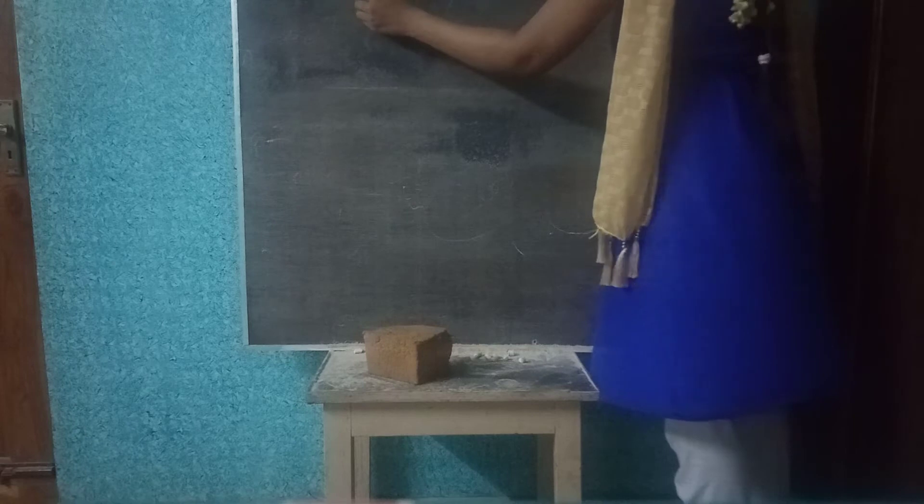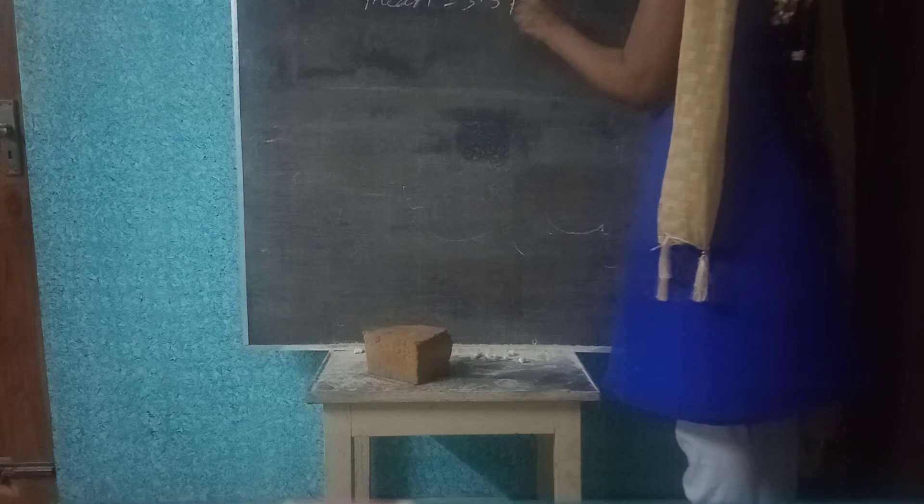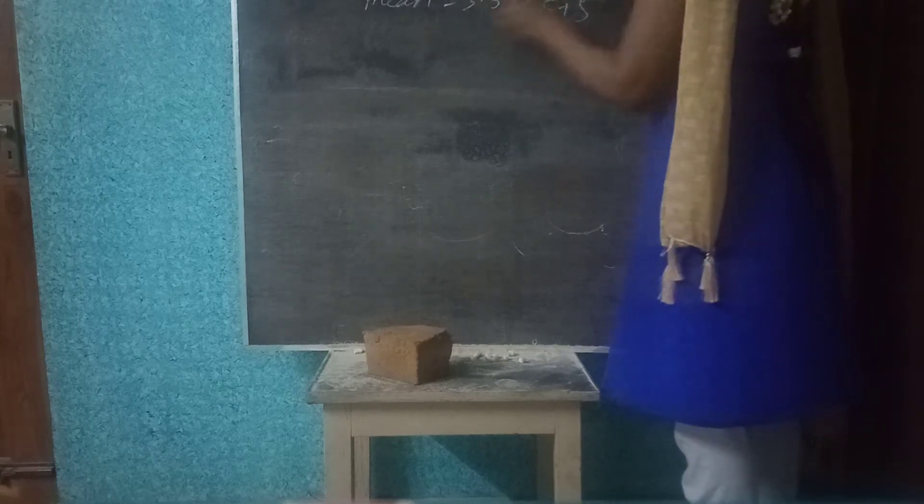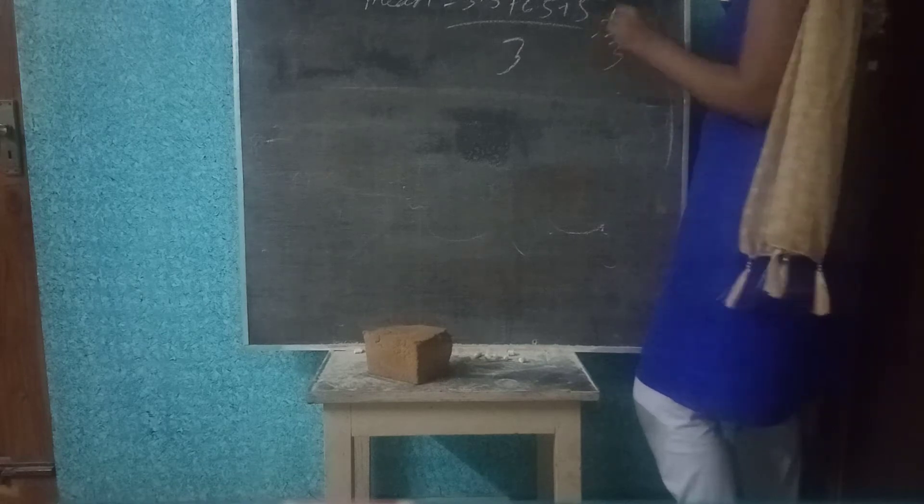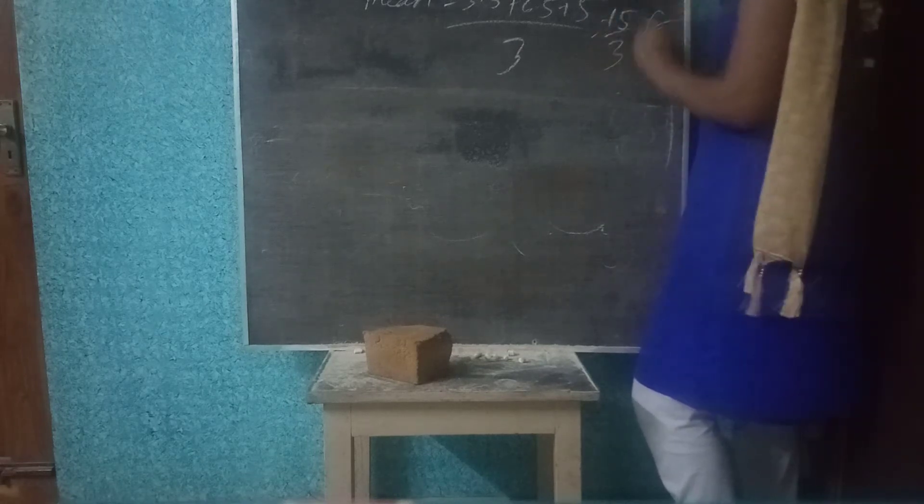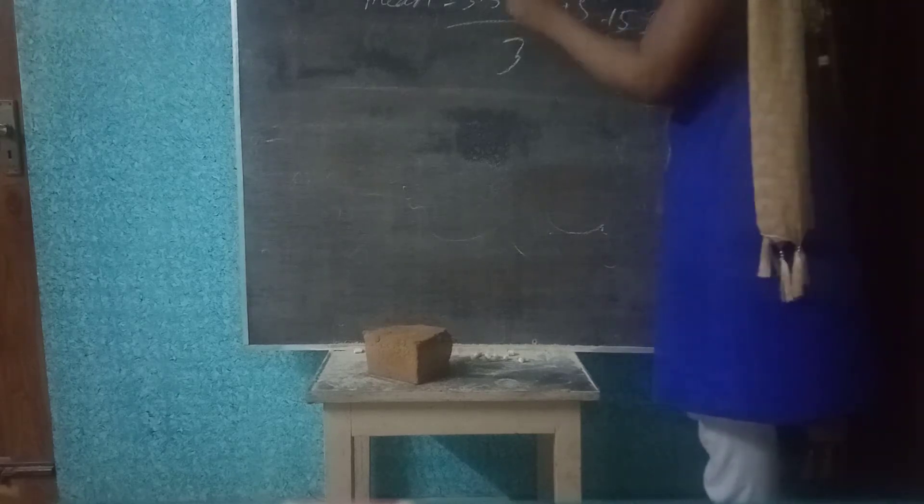So mean sample total is 3.5 plus 6.5 plus 5 by 3. So if the total is 15, 15 by 3 is 5. So if the average mean sample population.